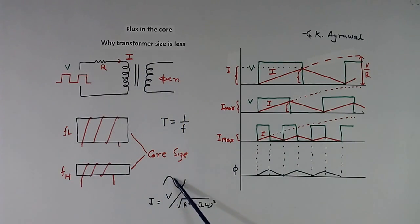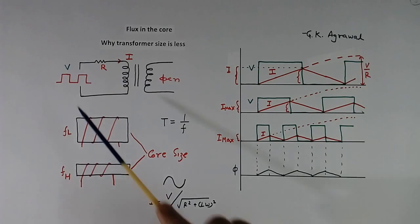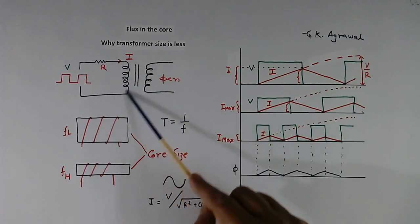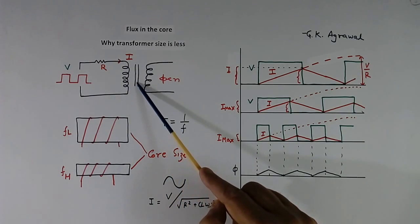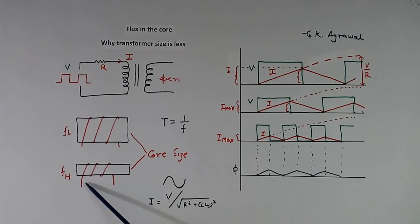If we give pure AC, then the current flowing will be V divided by the square root of R-squared plus L-omega-squared. When we increase frequency, the L-omega term increases, so the total impedance increases and current comes down. So in the case of pure AC also, if there is no load, current flowing will come down as frequency increases. If current comes down, flux comes down, then core area comes down, weight comes down, and copper wire length and copper weight also come down.